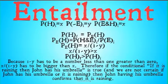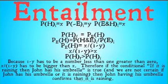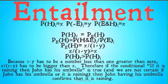Therefore, our evidence confirms the hypothesis based on the entailment. Because 1 minus Y has to be a number less than 1 and greater than 0, X over 1 minus Y has to be bigger than X. So if the conditional 'if it is raining, then John has his umbrella' is true, and we are not certain whether John has his umbrella or whether it is raining, then John having his umbrella confirms that it is raining — it makes it more likely, and should give us a higher degree of belief that it is raining.